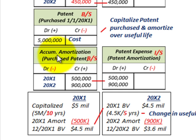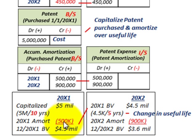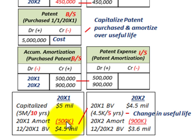We have to amortize this purchased patent. For 20x1, the capitalized amount was $5,000,000 with a 10-year life. So $5,000,000 divided by 10 years gives us an amortization amount for 20x1 of $500,000. Our carrying value or book value at the end of 20x1 is the capitalized amount of $5,000,000 less the amortization expense of $500,000, giving us a carrying value of $4.5 million.